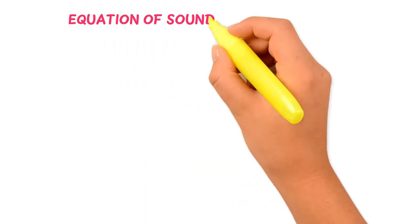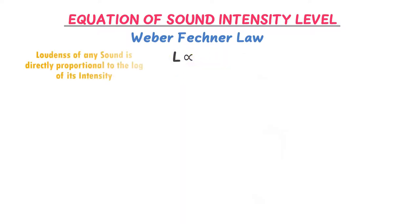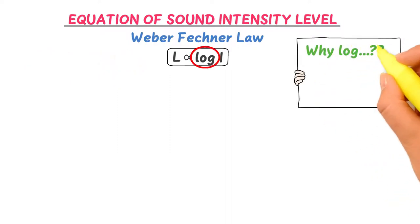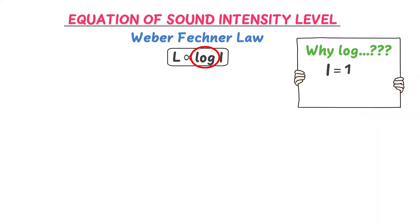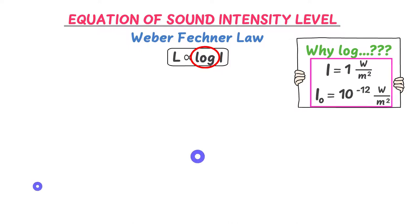Therefore we use log to make big or small numbers more simple and understandable. Now what is the equation of sound intensity level? We derive it using the Weber-Fechner law, which states that the loudness of any sound is directly proportional to the log of sound intensity. Weber-Fechner used log because the range of sound intensities — from 1 watt per meter squared down to I₀ = 10⁻¹² watts per meter squared — involves very extreme numbers.